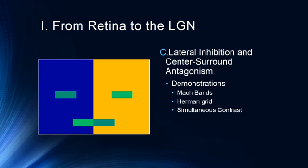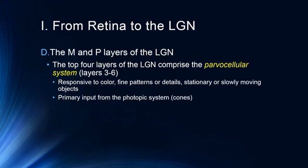We'll discuss this more in our separate lecture on color vision, but when two different colors are placed right next to one another, we get a change in color perception due to simultaneous contrast. This happens with black and white as well, and again relates to lateral inhibition based on nearby colors. Whatever colors are presented alongside a stimulus actually affects the color we perceive.